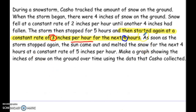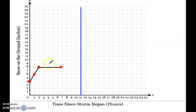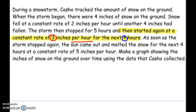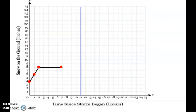The next part: it started again at a constant rate of three inches per hour for the next four hours. Notice the difference — the previous segment was about four inches, now we're looking at four hours. So we go horizontally five hours over, and now we count the slope, which is three inches per hour. You go up three and over one, up three and over one, for a total of four hours.